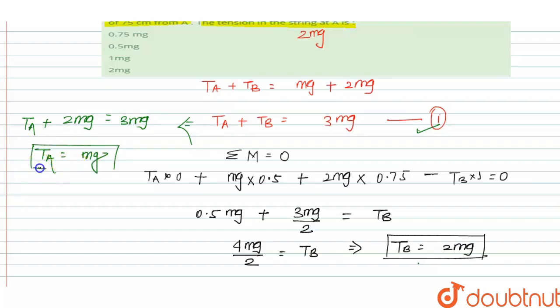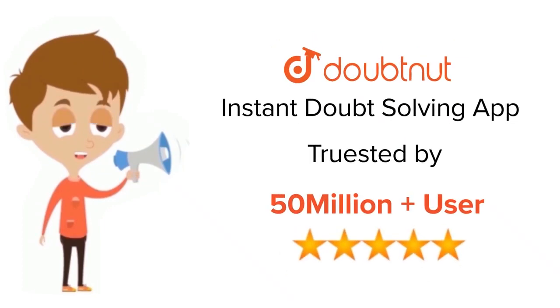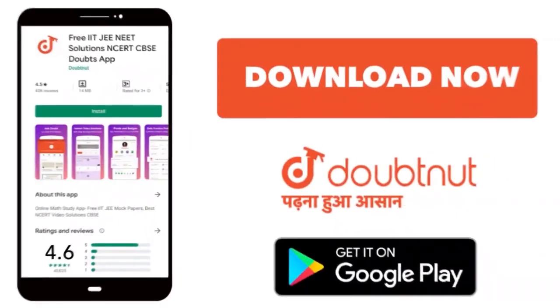This is the required condition. Tension at A equals Mg, and this is the right answer. When we see the options, option C is the right answer. Thank you. For class 6 to 12th, IIT and NEET level, trusted by more than 5 crore students, download Doubtnet app today.